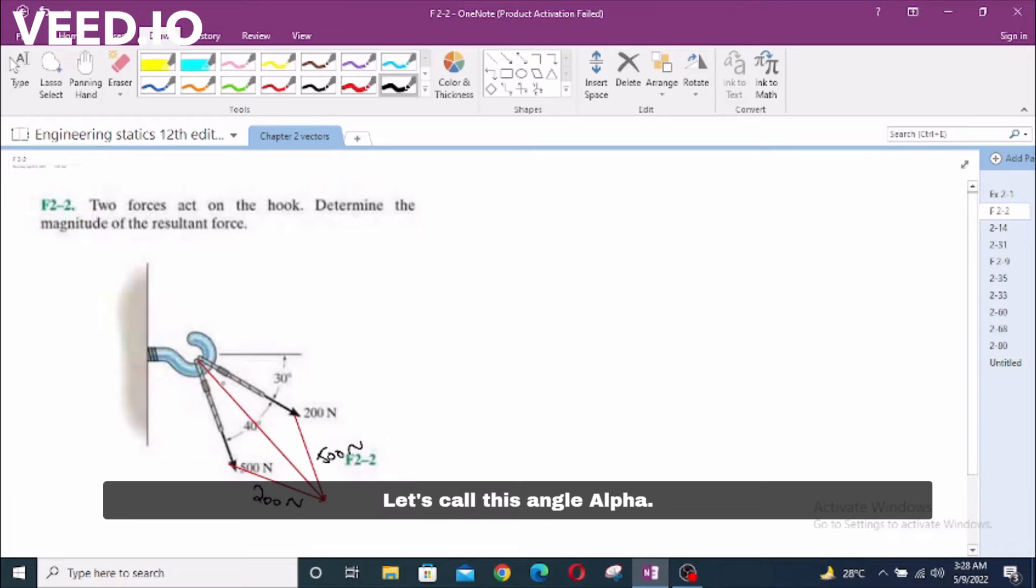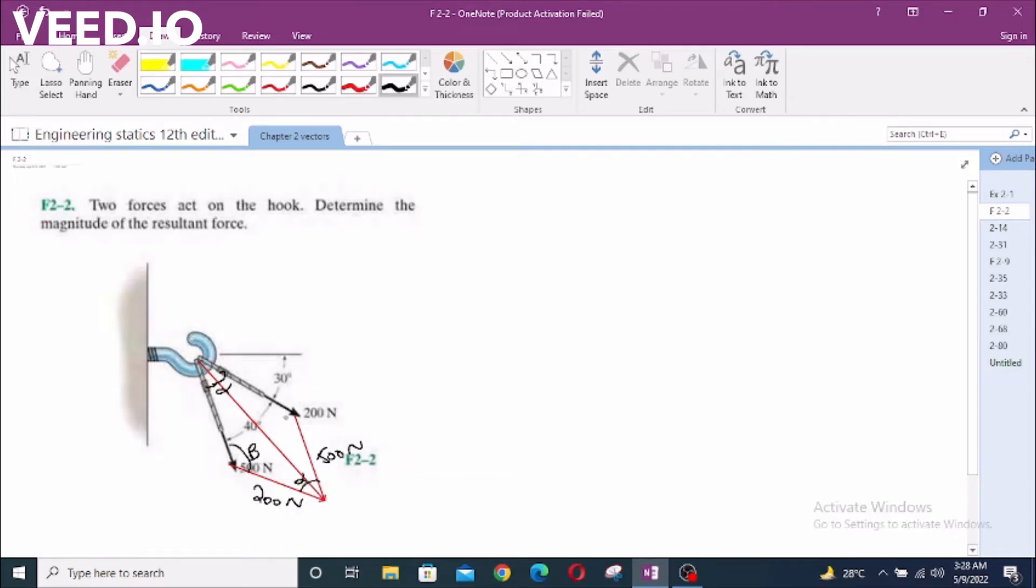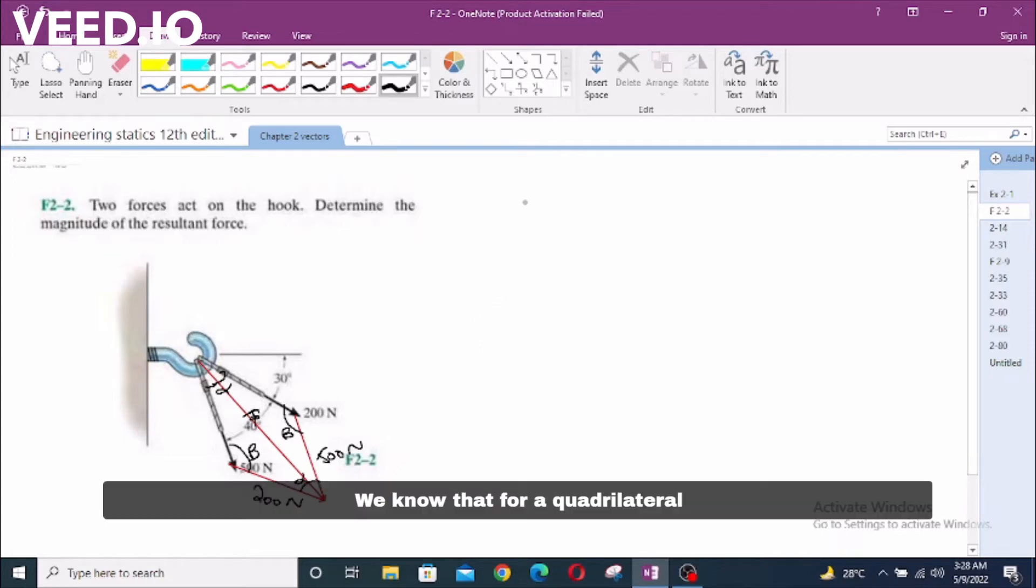Now, let's call this angle Alpha. This is also Alpha. This angle is Beta. This angle is Beta. This is Fr. We know that for a quadrilateral the sum of interior angles are 360 degrees.